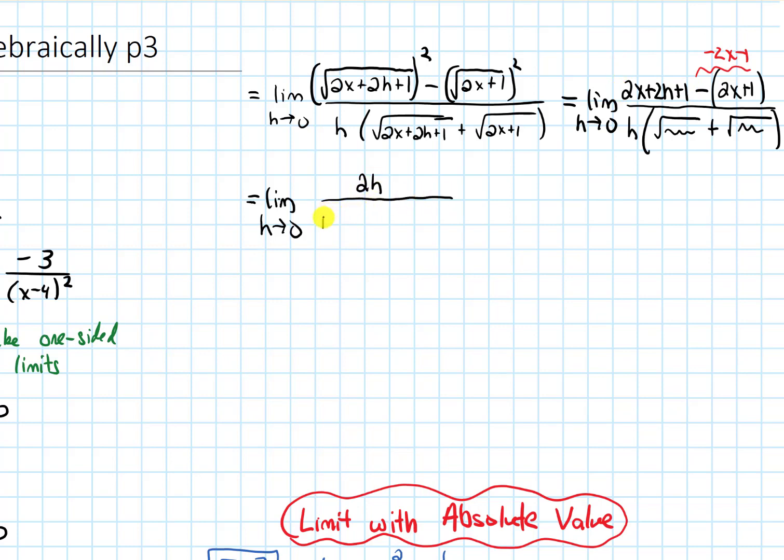On the bottom, I'm left with h times the first root, 2x plus 2h plus 1. And then plus the second root, 2x plus 1. And now notice something nice happens. This h cancels with that h. That's really why I didn't want to distribute that h out on the bottom. I mentioned it would be easier to see what cancels later when I don't distribute that.